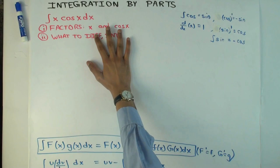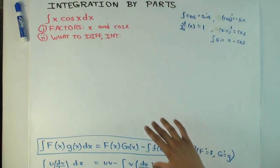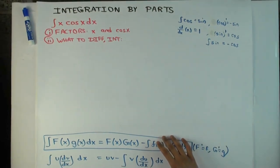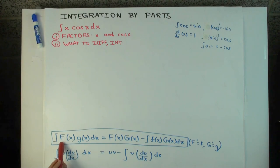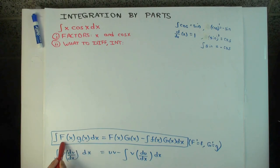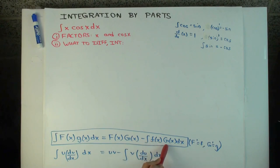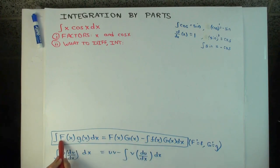That's not enough to get started with integration by parts. You have to decide, among these two factors, which is the part to differentiate and which is the part to integrate. The formula says: the integral of a product f·g is capital F times capital G minus the integral of little f times capital G, where capital G is an antiderivative for little g, and little f is the derivative of capital F.